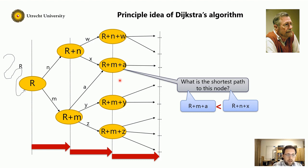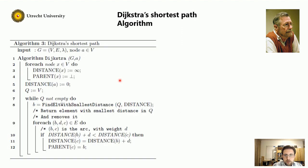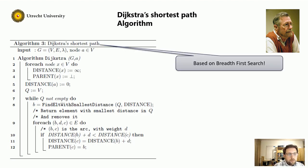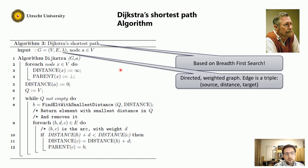So this is the principal idea of Dijkstra's algorithm. In code, the algorithm looks as follows. The algorithm is based on a breadth-first search. It takes as input a weighted graph and a start node A. And remember, this is a weighted graph, so that means that edges are triples. It goes from some source node to some target node with some distance. So it's a triple source, distance, target.